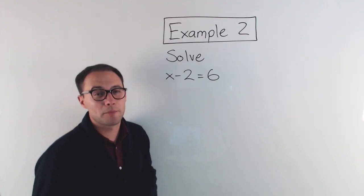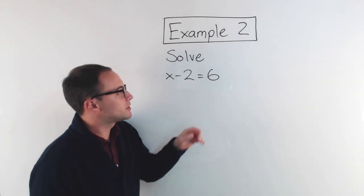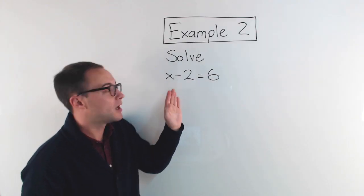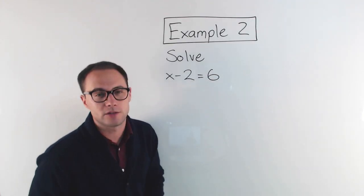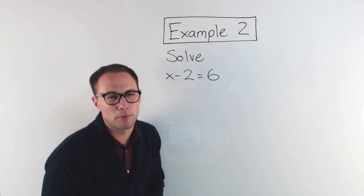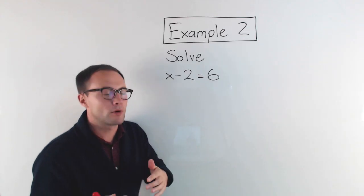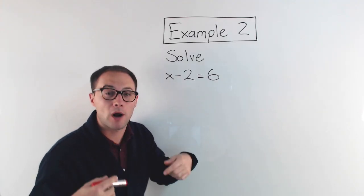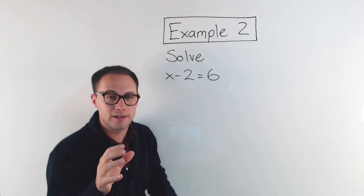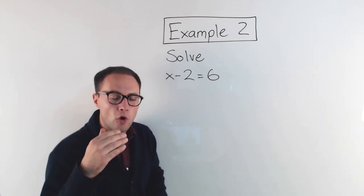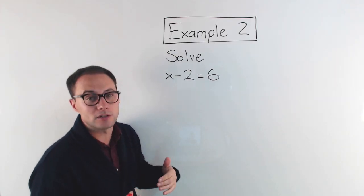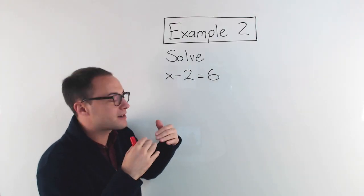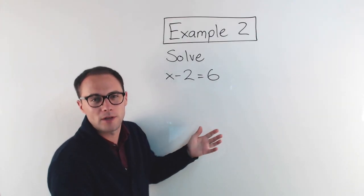Let's look at an example. Here's example number two: solve x minus 2 is equal to 6. Solving an equation just means finding the solution — finding the value of x that makes this equation true. It's going to be pretty simple at first, and a lot of them you'll be able to figure out just using mental math, but that's not the point. The point is to learn the process so that when it gets more difficult, you already know what to do.